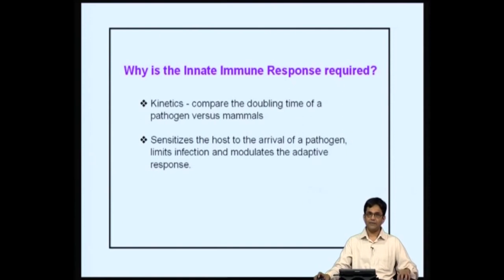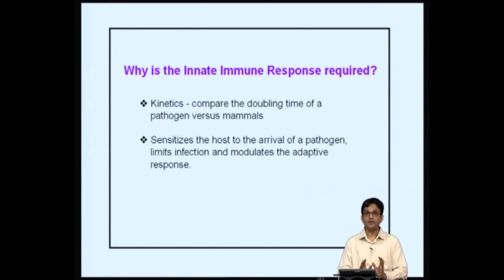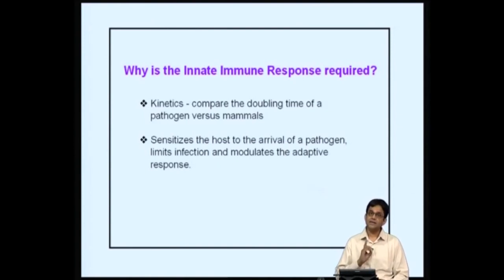In essence, the innate immune response sensitizes the host to the arrival of the pathogen, limits infection, and modulates the adaptive immune response. In this class we will try to understand the molecules and processes by which the innate immune response sensitizes the host to pathogens, how it limits infection — preventing dissemination throughout the body — and how it sends a signal to the adaptive immune response to generate a more vigorous and specific response.